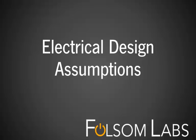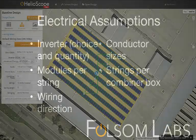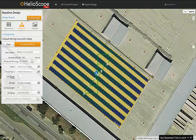Here we'll explain the electrical assumptions used in Helioscope. An electrical design includes assumptions around the inverters used, the modules per string and wiring direction of the string, and the conductor sizes and sizes of the combiner boxes. We'll start with an existing design and toggle the assumptions one by one.